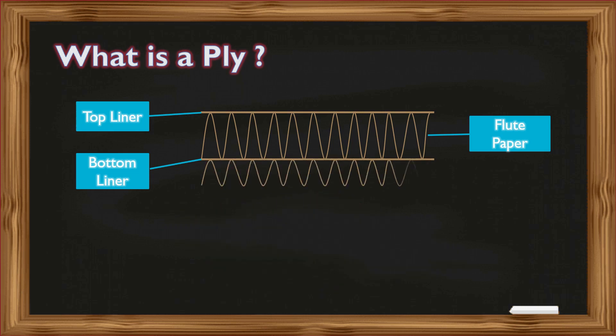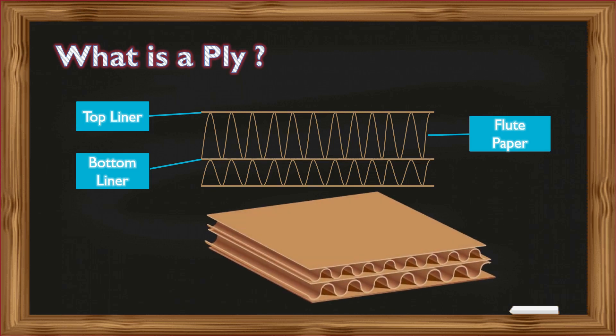When we add two more layers to it, it becomes a five-ply. That is, three-ply board is added with a corrugated paper and on top of it another plain paper.